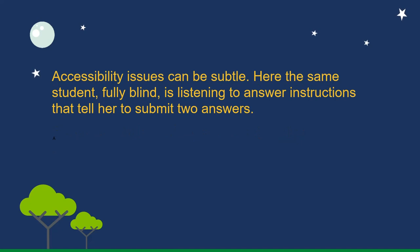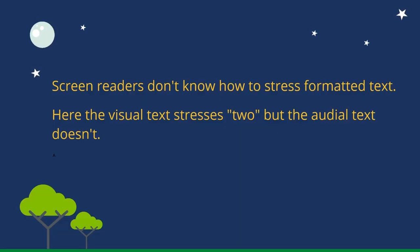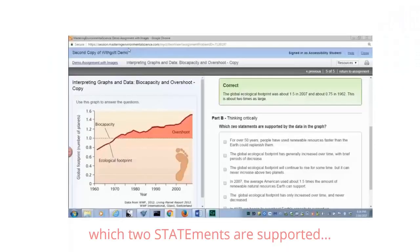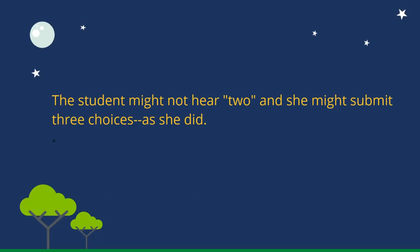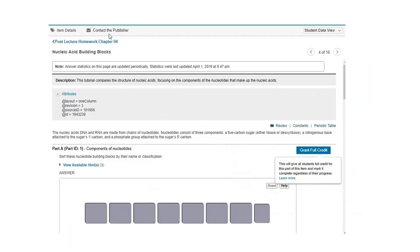Accessibility issues can be subtle. Here, the same student — still fully blind — is listening to answer instructions that tell her to submit two answers. Listen to how the screen reader reads: 'Which two statements are supported by the data in the graph?' Screen readers don't know how to stress formatted text. The visual text stresses 'two,' but the audio text doesn't. The student might not hear 'two,' and she might submit three choices, as she did. This item is theoretically accessible and usable, but it would be better without the reliance on formatting. Using Contact the Publisher, we ask the publisher to change the item so that the text tells the student to submit two choices.